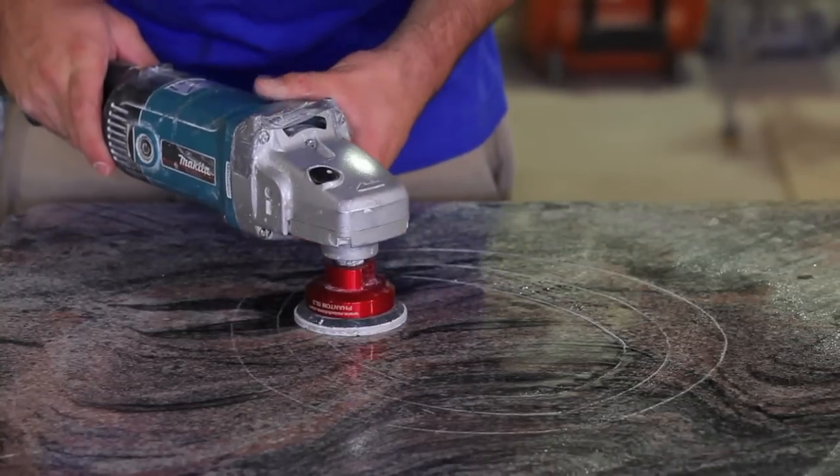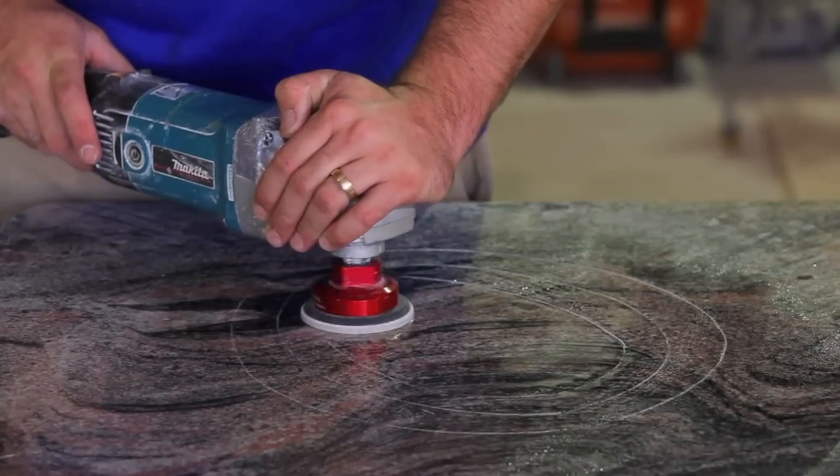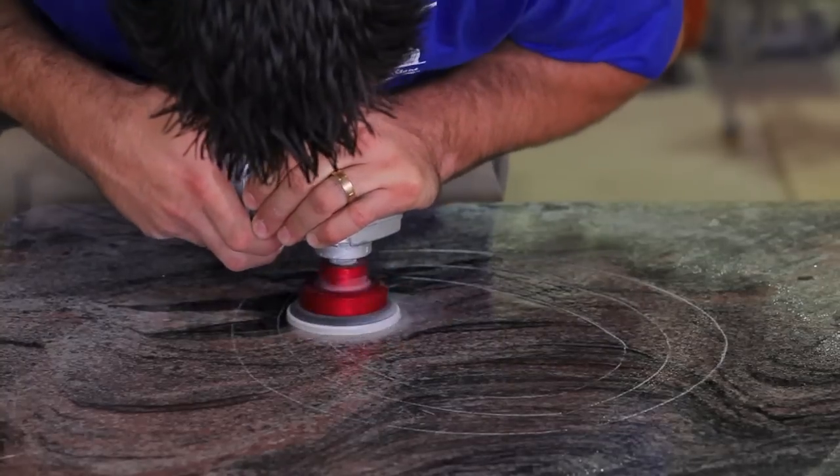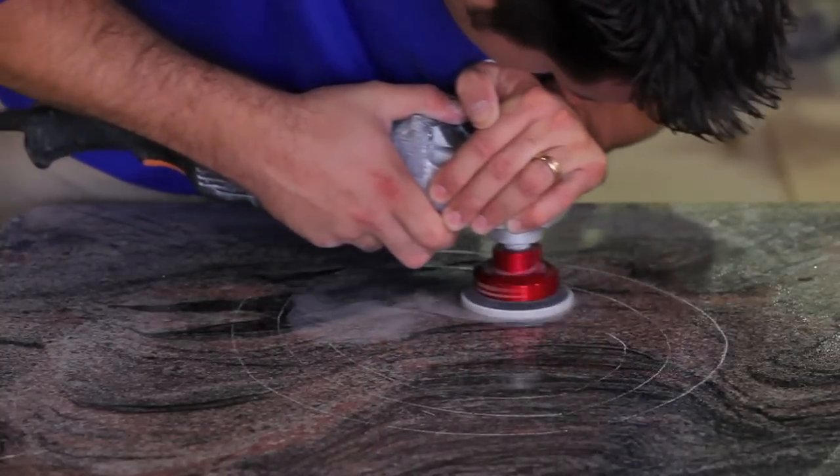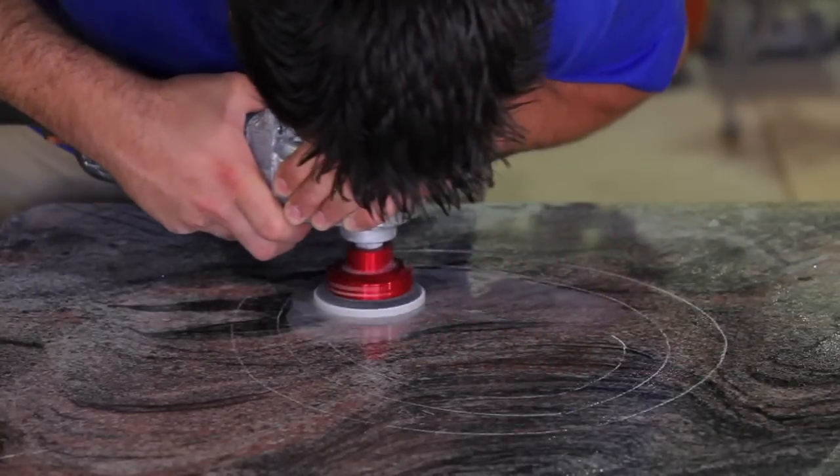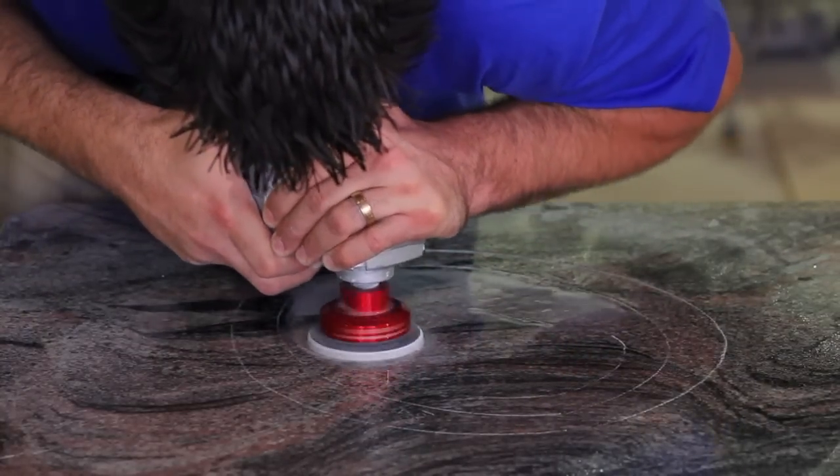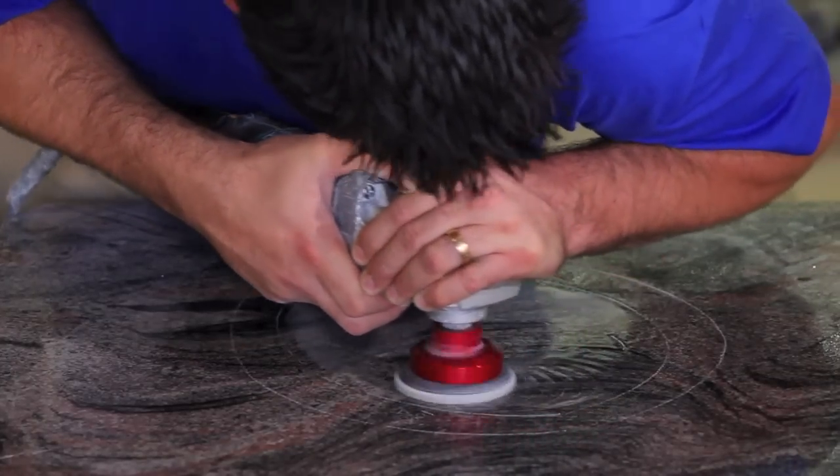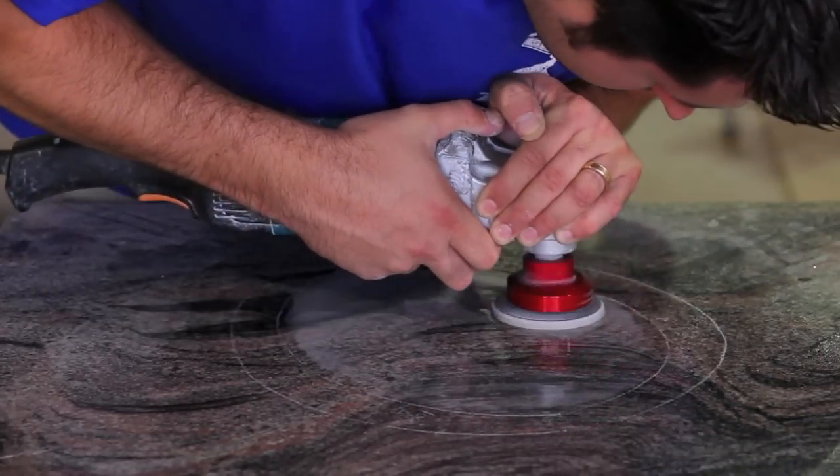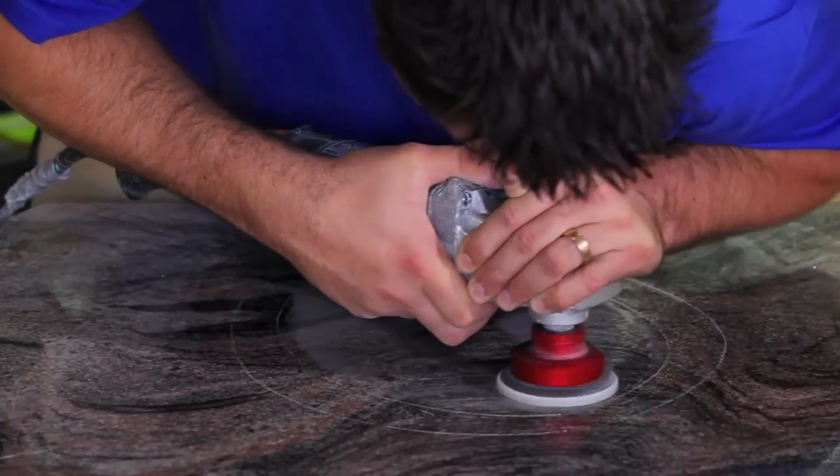Again, place the machine on the surface before starting. Start on the outer perimeter of your scratch pattern and work your way towards the center. Even the 1000 grit resin will remove a significant amount of material. It is important to use this pad thoroughly but also to be careful and not create a wave in the surface.